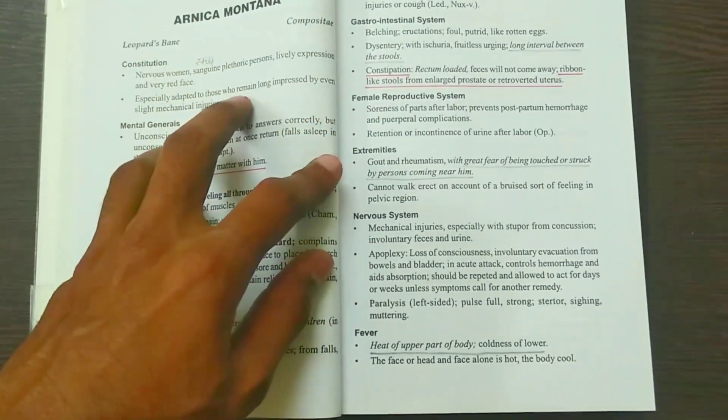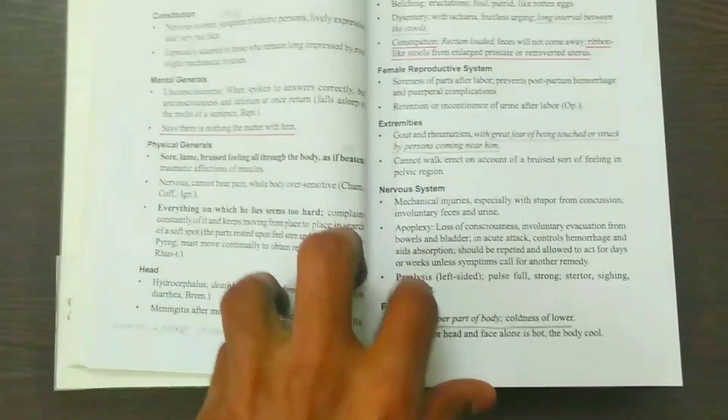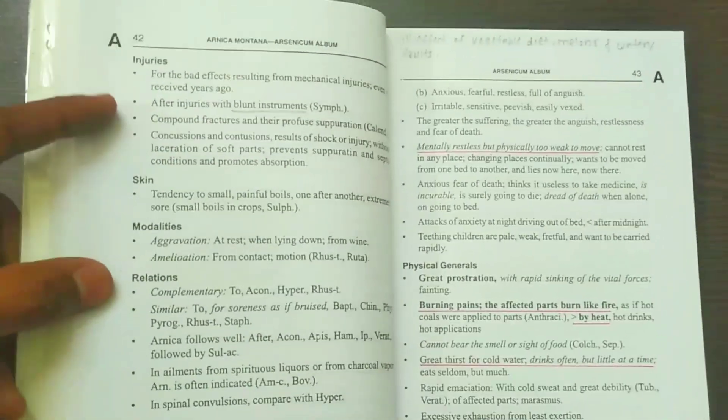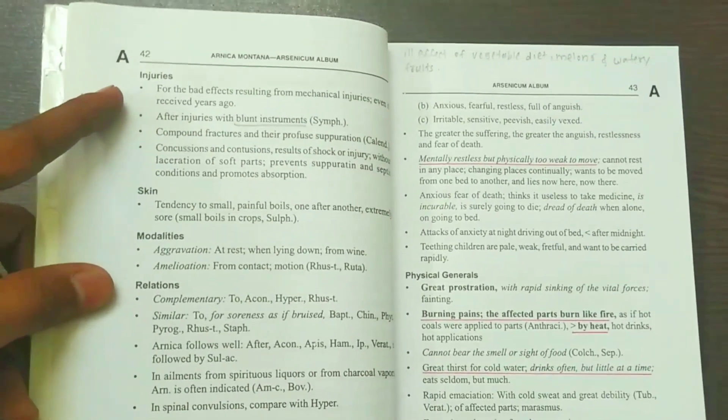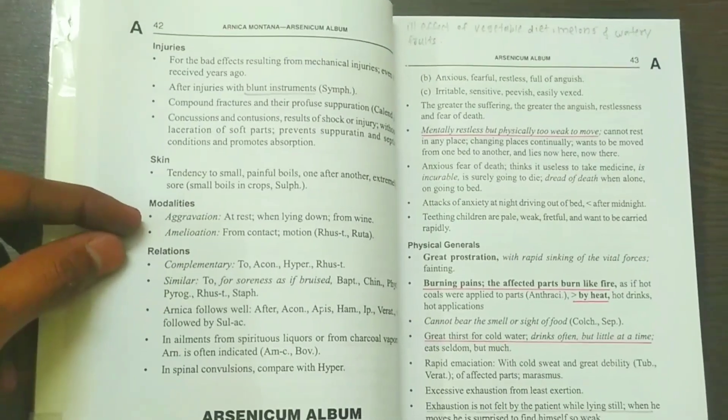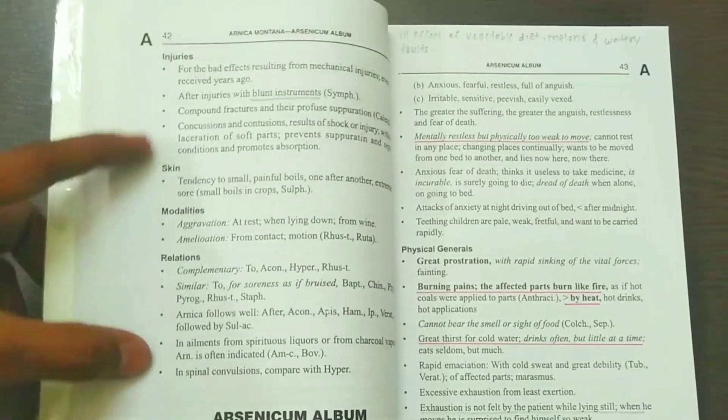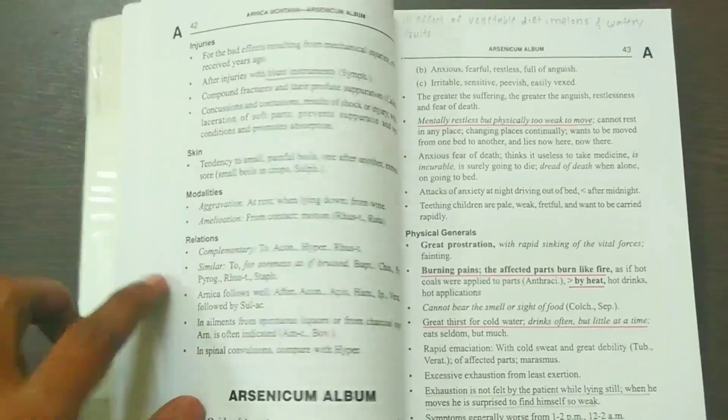All systems like fever are covered, but mostly Arnica Montana is used for injury. This is the important keynote for this medicine. Modalities are given, and relations with modalities mean aggravation and amelioration.